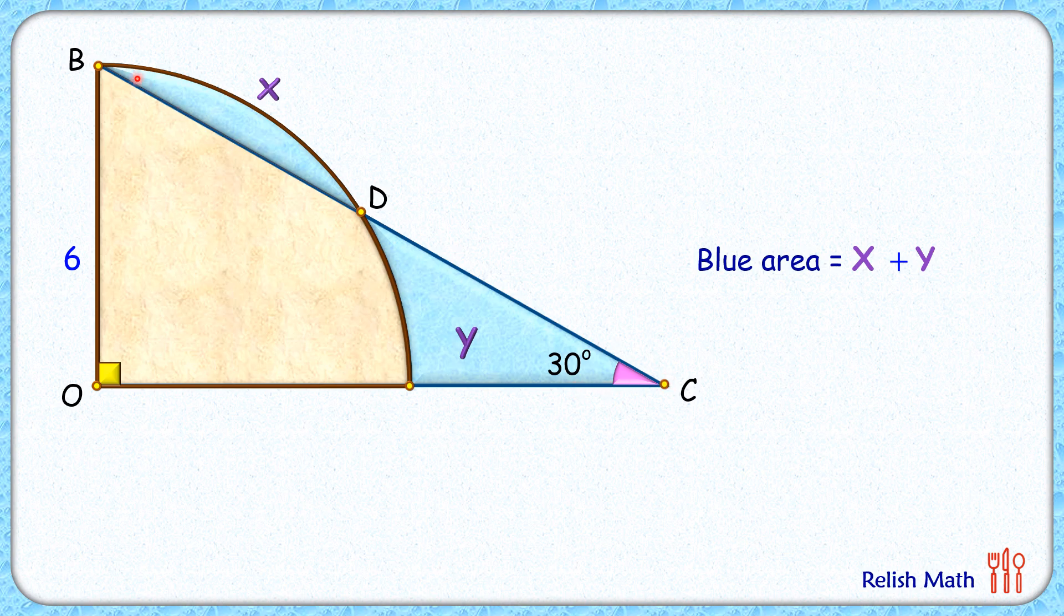Let's join OD here. OD is the radius of the quadrant, which is given as 6 centimeters. Now triangle BOD is an isosceles triangle, and thus opposite angles to equal sides will be equal. The angle at point D is 60 degrees. By angle sum property, this angle here will be 60 degrees, or we can say triangle BOD is an equilateral triangle with side length BD as 6 centimeters.